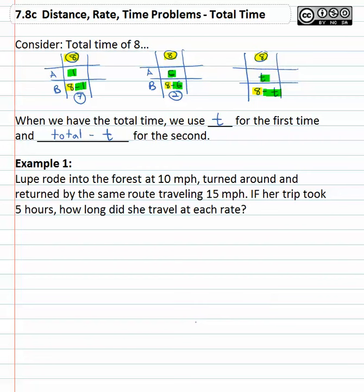Let's see what this looks like. Lupe rides into the forest at 10 mph, turns around and returns by the same route traveling 15 mph. If her trip took 5 hours total, how long did she travel at each rate? Lupe travels into the woods and she travels out of the woods—in on top, out on the bottom.